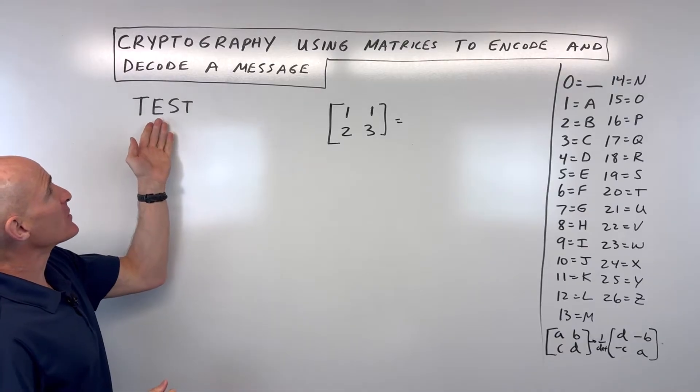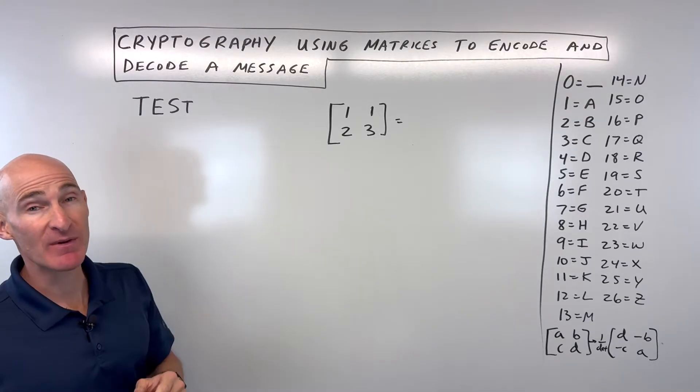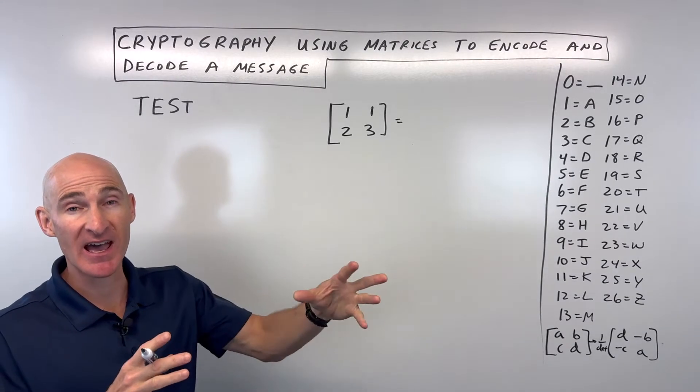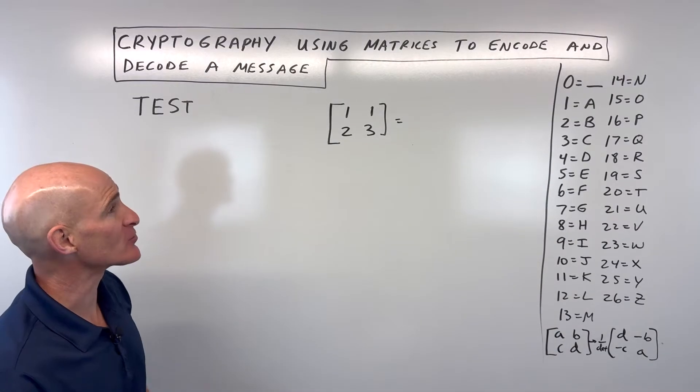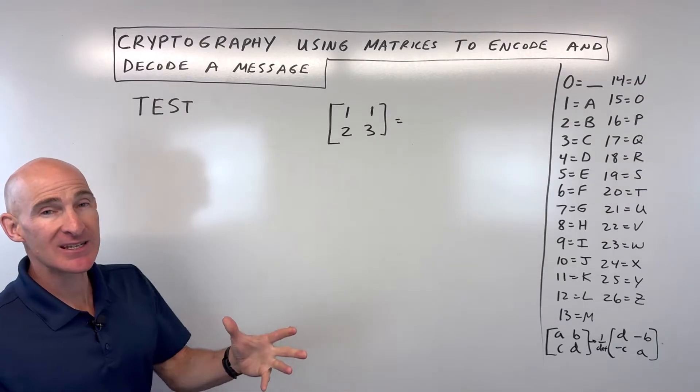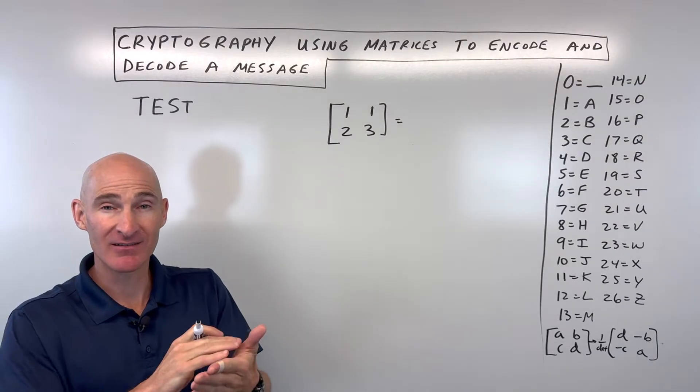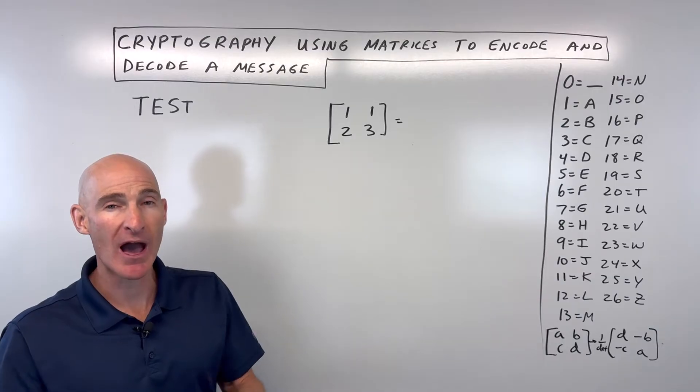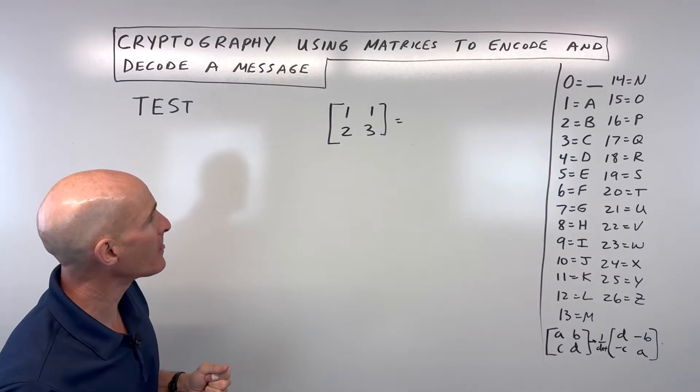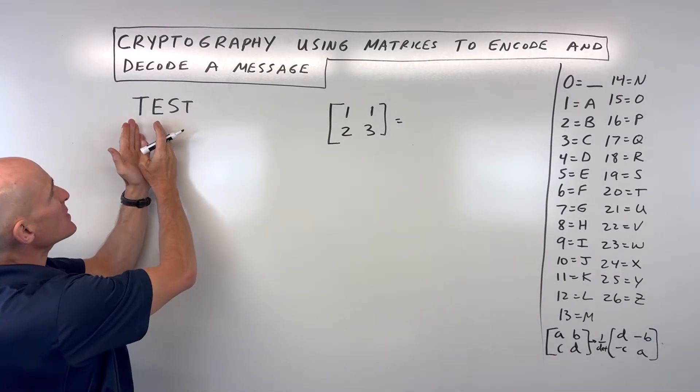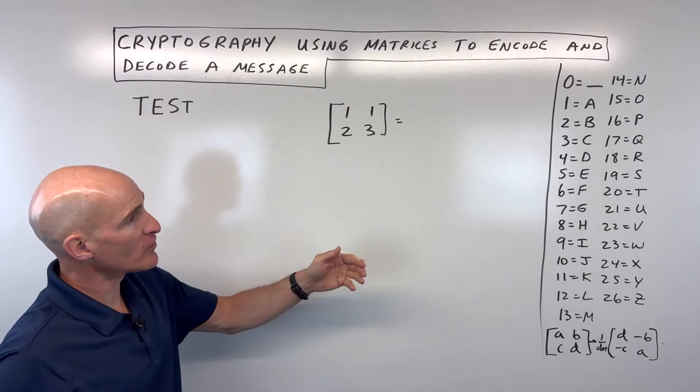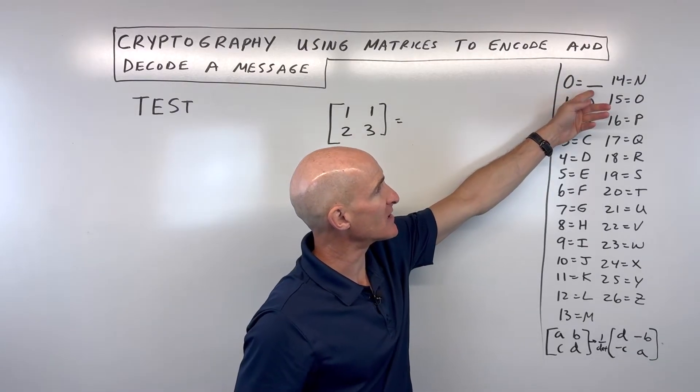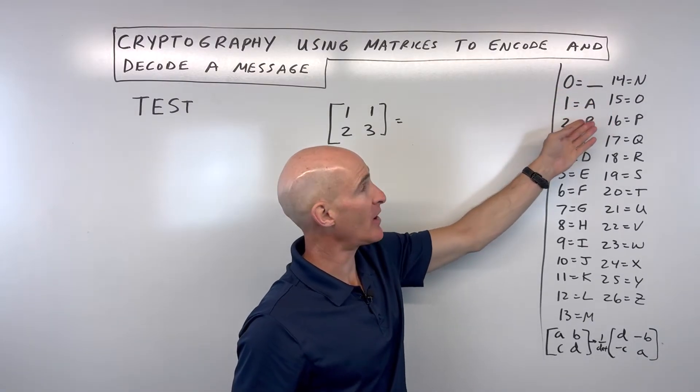Let's say, for example, you wanted to send this test message. You just want to send the message TEST, T-E-S-T, to a friend across the world or maybe just across the classroom. But you don't want anybody to intercept that message and read this secret message. So how do you encode it using a matrix?